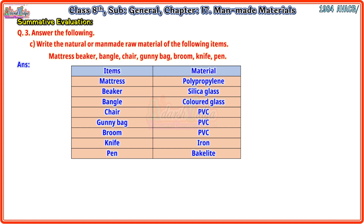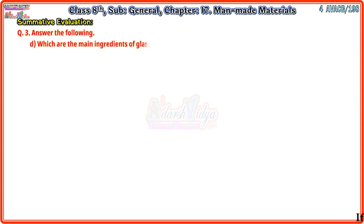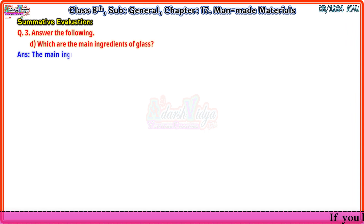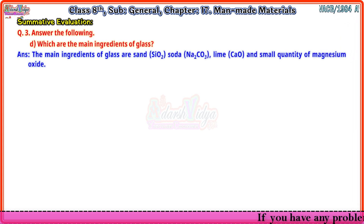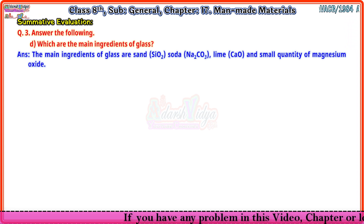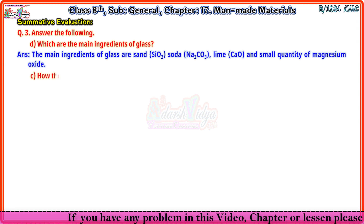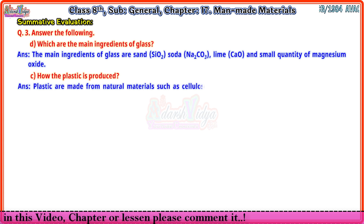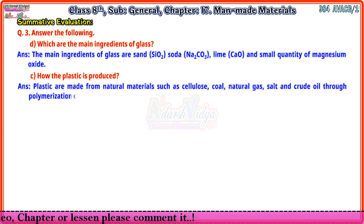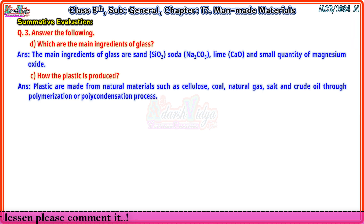Continuing Question 3: Gunny bag - PVC; broom - PVC; knife - iron; pen - bakelite. Fourth: The main ingredients of glass are sand (SiO₂), soda (Na₂CO₃), lime, chow, and small quantity of magnesium oxide. Fifth: Plastic is made from natural materials such as cellulose, coal, natural gas, salt, and crude oil through polymerization or polycondensation process.